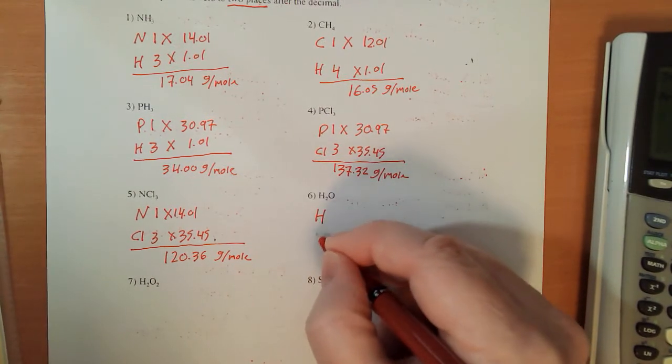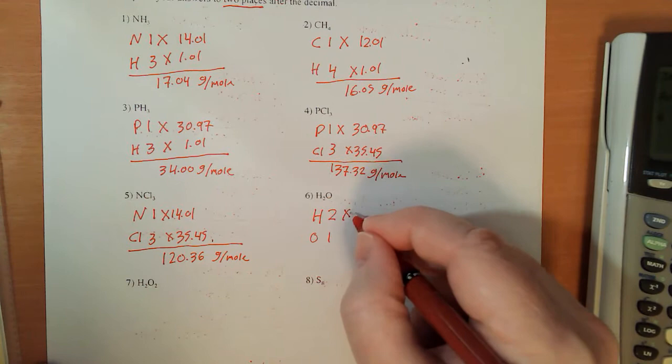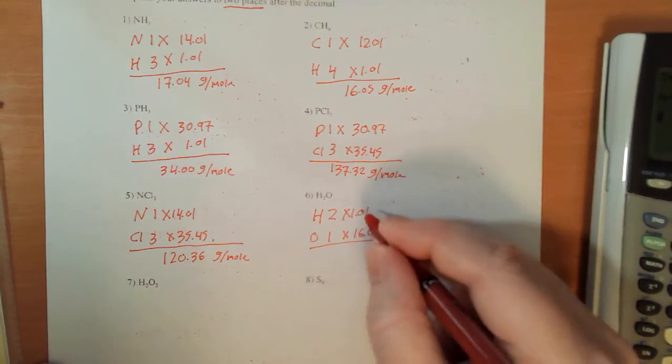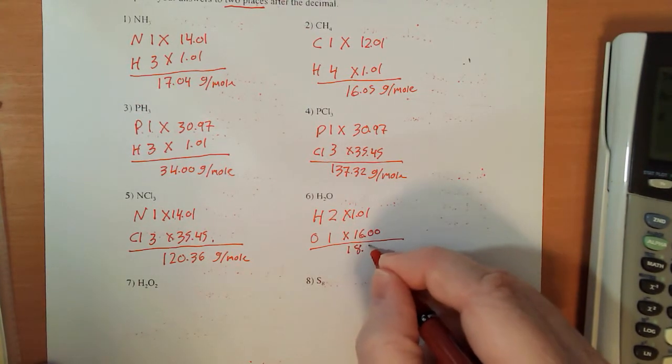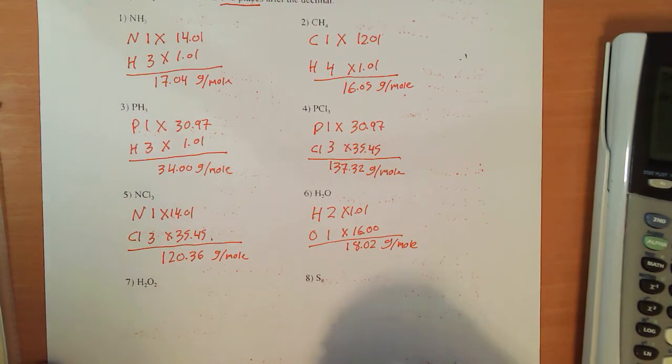H2O, I've got hydrogen and oxygen, two hydrogens and one oxygen. 1.01 times 2 and 16.00, that I can actually do in my head, it's 18.02 grams per mole.